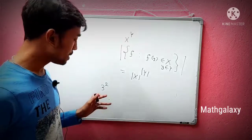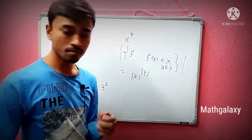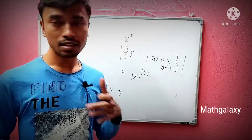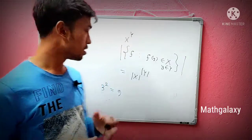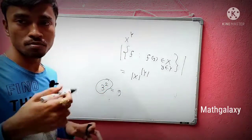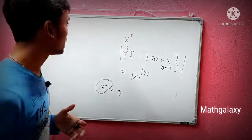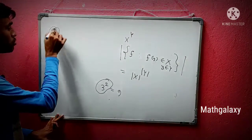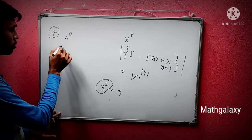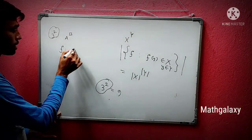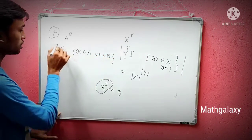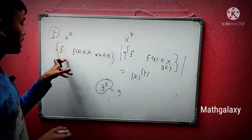Let's talk about 3 to the power 2. In a school-level way, we basically mean this as nine. But in a broader perspective, let's define a set A and a set B. Then 3^2 represents the collection of all those functions satisfying the condition that f(b) belongs to A for all b belonging to B.